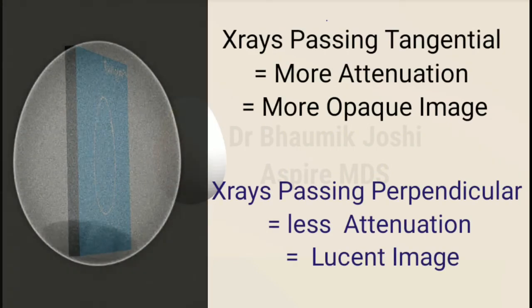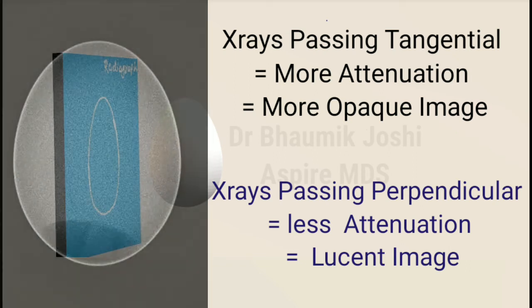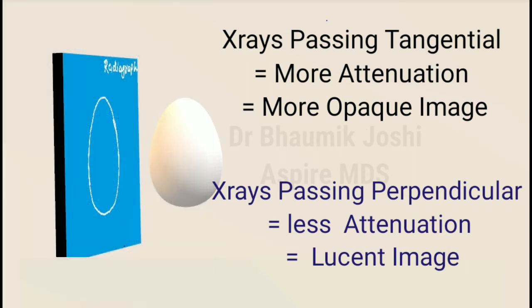We now know that x-rays passing through the tangential area will be attenuated more. Hence, the top, bottom, and the peripheries are appearing radio-opaque whereas the center part is appearing radiolucent. This is the principle behind the formation of the eggshell effect. Now let's see some examples where the eggshell effect takes place in the oral cavity and head and neck.